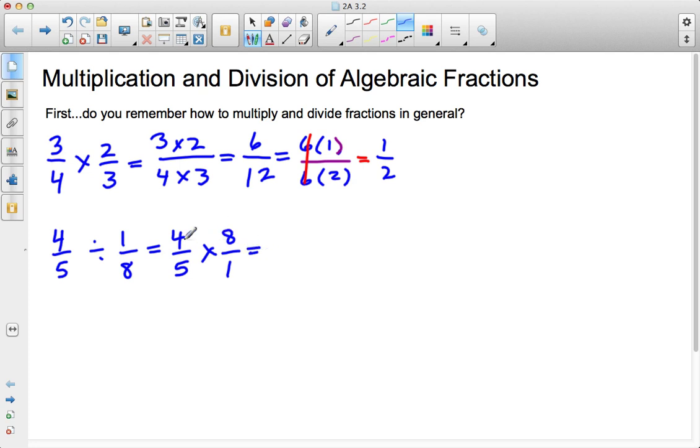Now I can follow the rules as before, 4 times 8 is 32, and 5 times 1 is 5. In this case, there's nothing to simplify because 5 does not go into 32, so I'm going to go ahead and leave this as an improper fraction of 32 over 5. Here are my two answers.